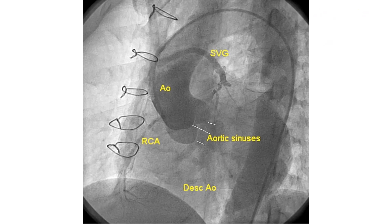Aortic root angiogram for visualization of saphenous vein grafts is done when attempts at selective cannulation of saphenous vein grafts fail. It is always worthwhile to check the operative notes to know the positions of the saphenous vein grafts before attempting cannulation, as the diagrams often guide us. If the diagrams are not available, blind probing at the usual sites of SVG-to-aorta attachment is done.